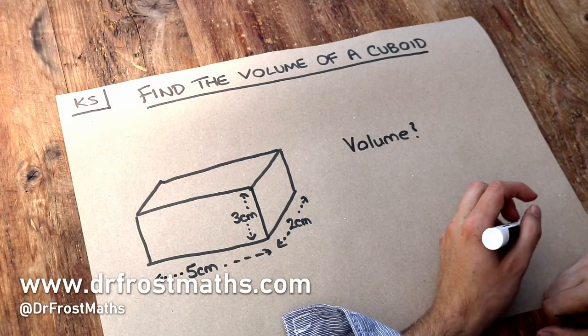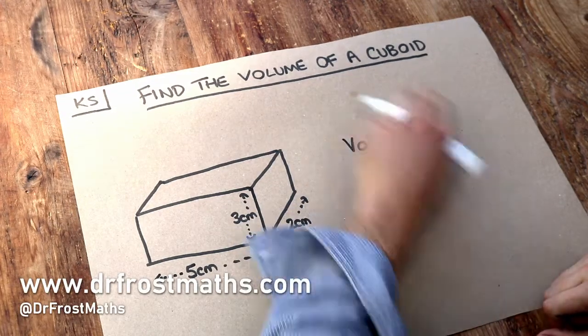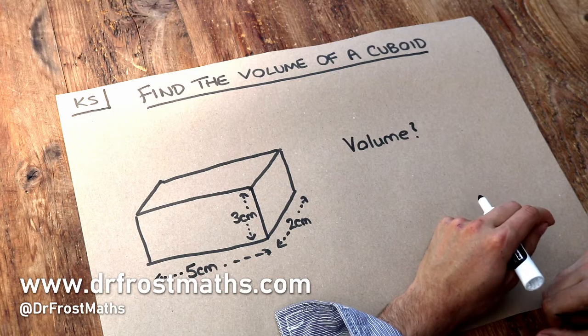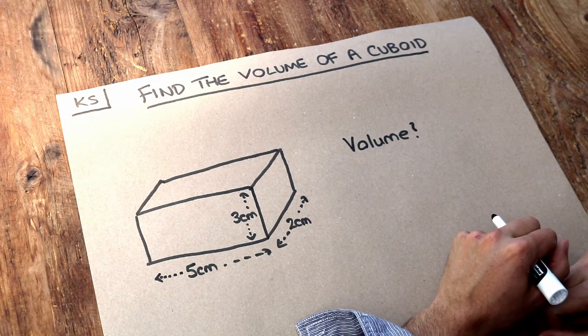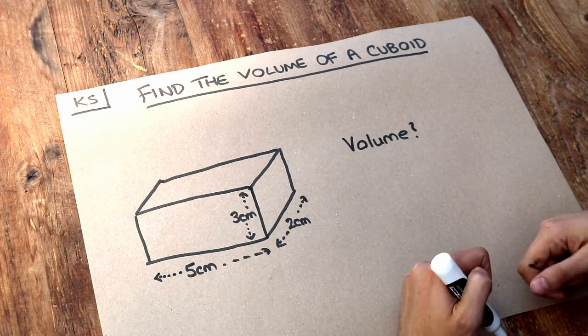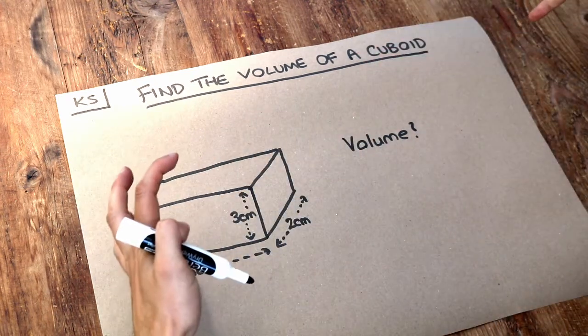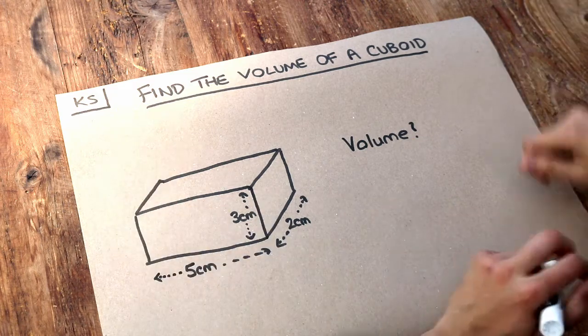Hello and welcome to this Dr. Ross-Math's key skill video on finding the volume of a cuboid. Now a cuboid is just effectively the 3D version of a rectangle and we want to find the volume which is how much space the 3D solid takes up in three dimensions.